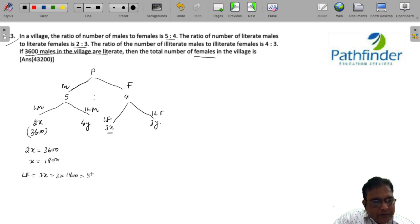Now we are told that the ratio of males and females is 5 as to 4. What is the number of males? Literate males plus illiterate males, so 3600 plus 4y. Divided by the number of females, that is 5400 plus 3y, which must be 5 upon 4.